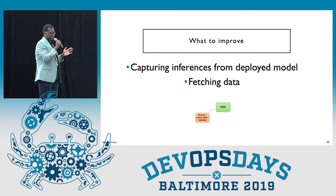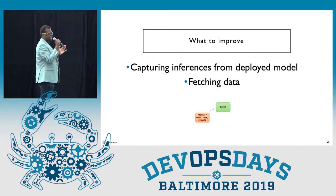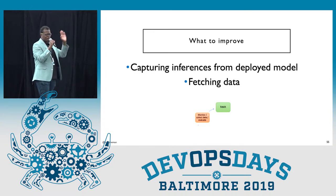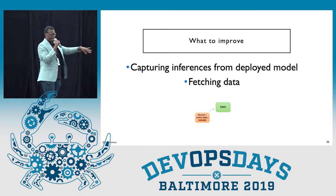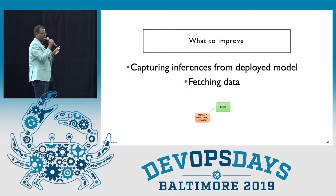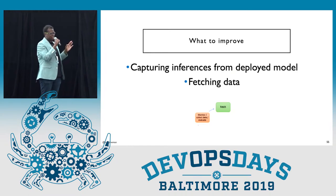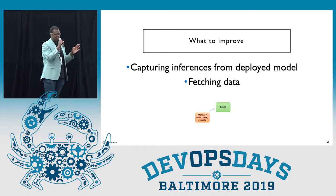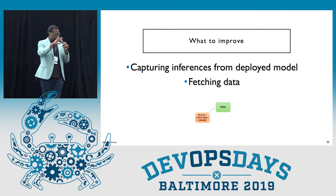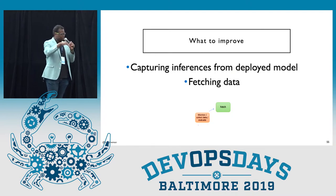Something that these tools still need to improve on is capturing inference from a deployed model. As you saw, once the model's been deployed, they're kind of on their own — they have external tools to measure that. And managing data: DVC was the only one that had a real pipeline to manage data. So those are two things that some of these tools can improve on.